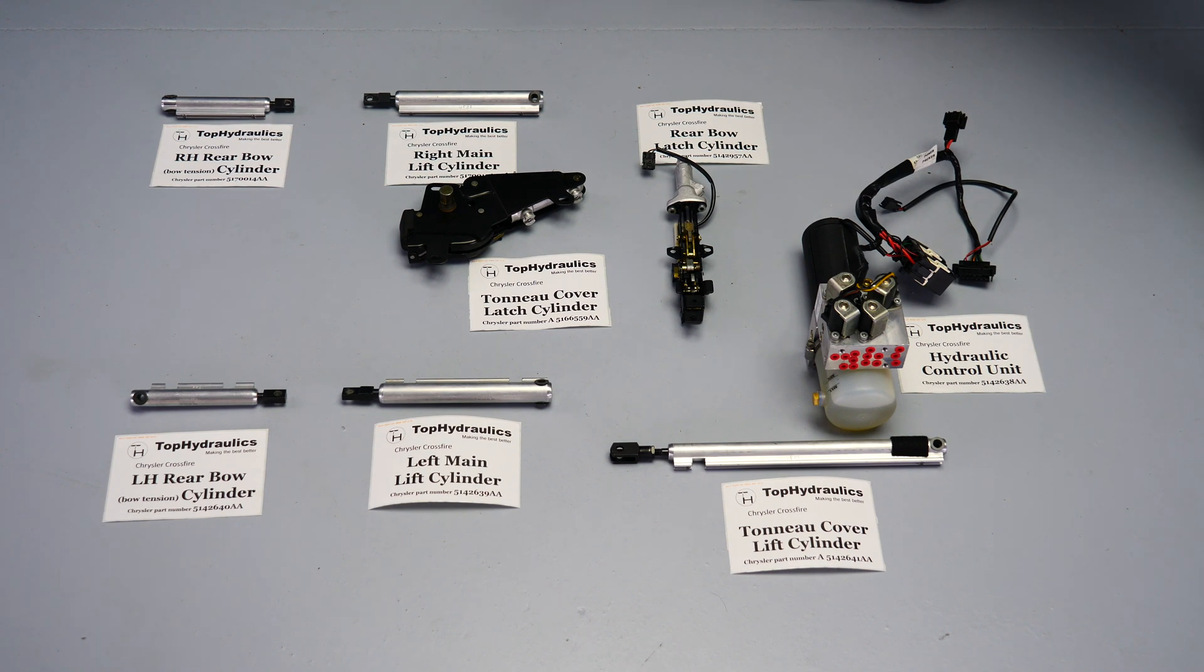Here are the seven cylinders and the pump laid out on the floor, roughly in their relationship that they are in the car except for the pump, which is in the far left corner mounted upright. Next to it is the tonneau cover lift cylinder which lifts the tonneau cover. Towards the middle in the rear we have the rear bow latch cylinder that you saw us latching in the manual opening and closing video.